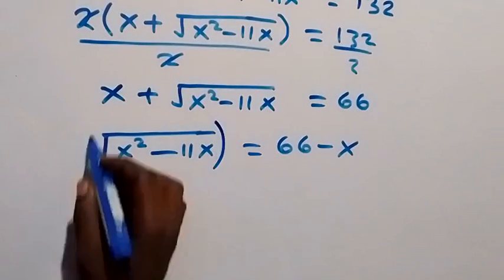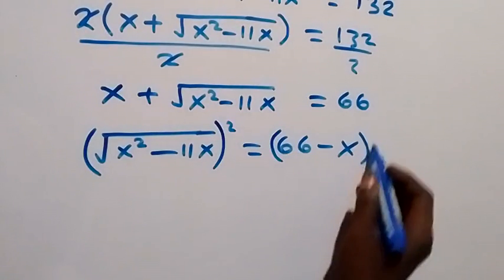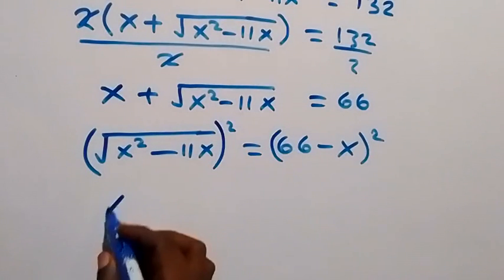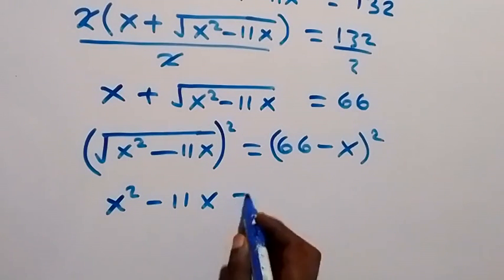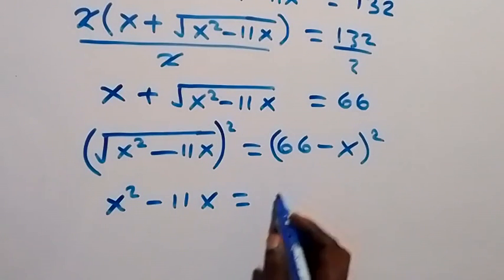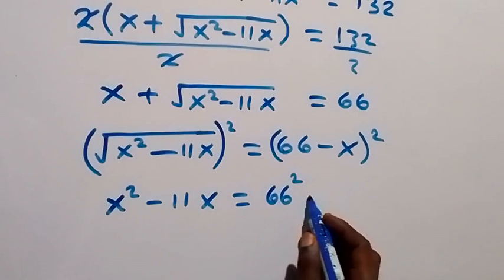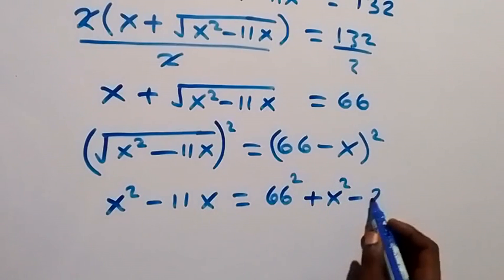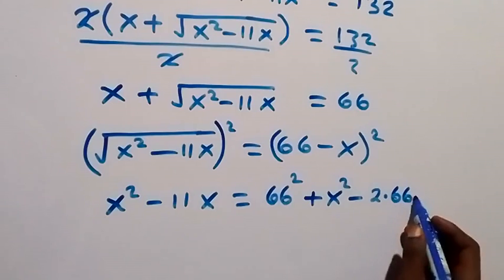Now we square both sides again. The square cancels the square root on the left, giving x² − 11x, which equals 66² plus x² minus 2 times 66 times x.